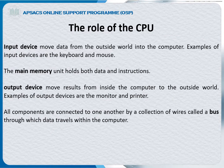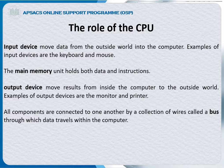Regarding the role of the CPU: input devices move data from the outside world into the computer — examples of input devices are keyboard and mouse. Main memory holds both data and instructions; instructions mean what the computer has to do and perform. Output devices move results from inside the computer to the outside world — examples are monitor and printer. All components are connected to one another by a collection of wires called a bus, through which data travels within the computer.